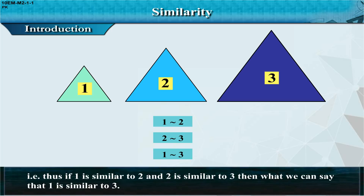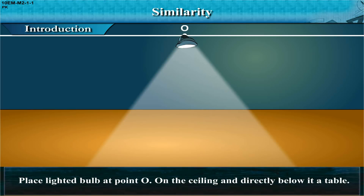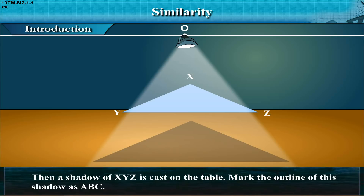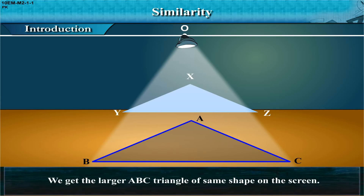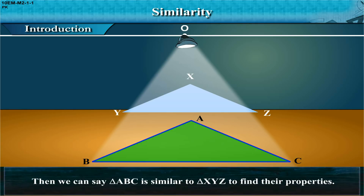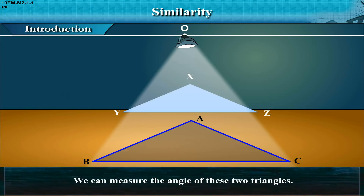Place a lighted bulb at point O on the ceiling and directly below it a table. Place triangle XYZ parallel to the ground between the lighted bulb and the table, then a shadow of XYZ is cast on the table. Mark the outline of this shadow as triangle ABC — we get the larger triangle ABC of the same shape on the screen. Vertex X corresponds to A, Y to B, and Z to C. So triangle ABC is similar to triangle XYZ.